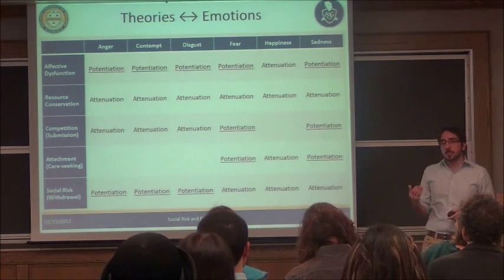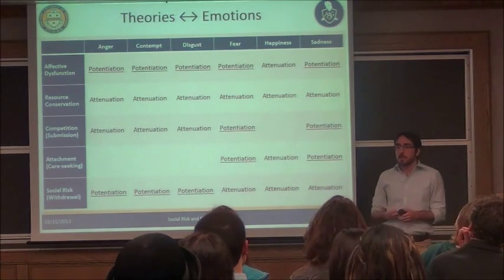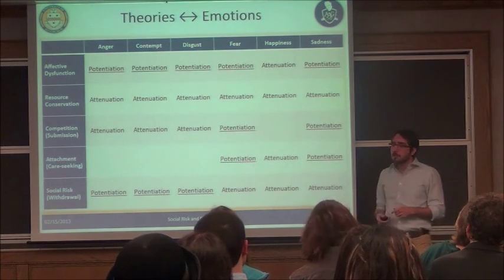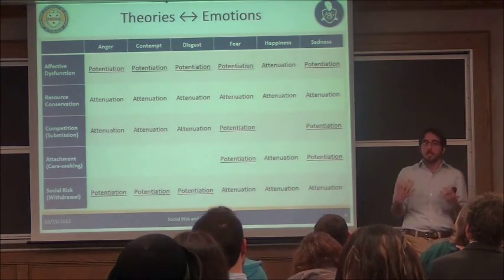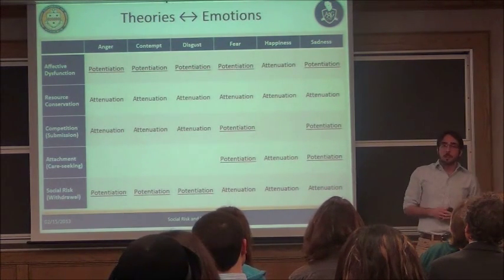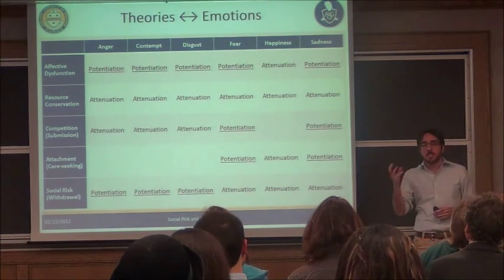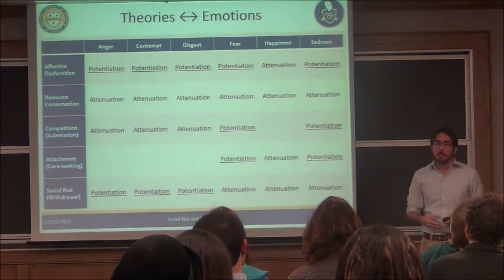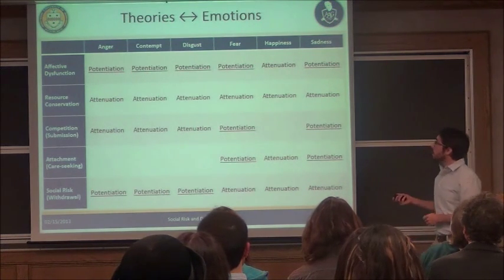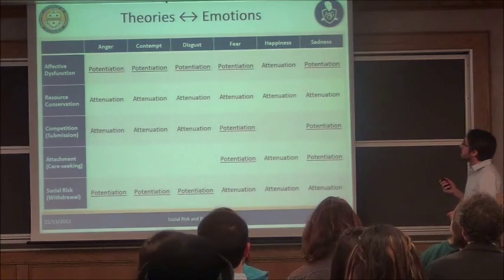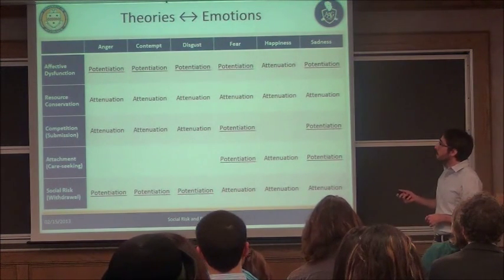The first is affective dysfunction theory. From an evolutionary perspective, it views the depressed state not as adaptive itself, but rather sees the broad affective structures — the ability to have a range of emotion — as what is adaptive. In depression, this system is being dysregulated: we get a lot of negative affect and very little positive emotion. So we should see a lot of anger, contempt, disgust, fear, and sadness, and very little happiness.